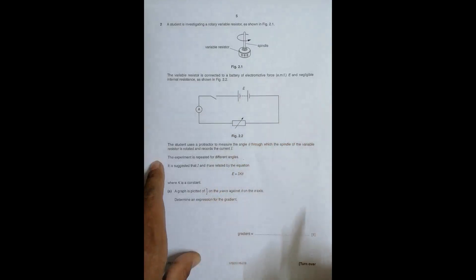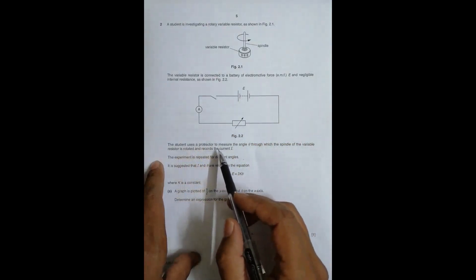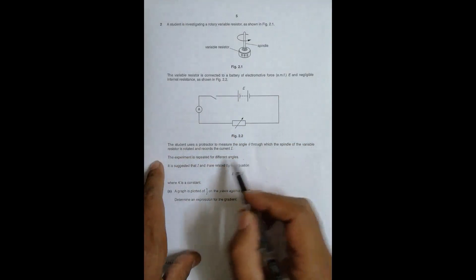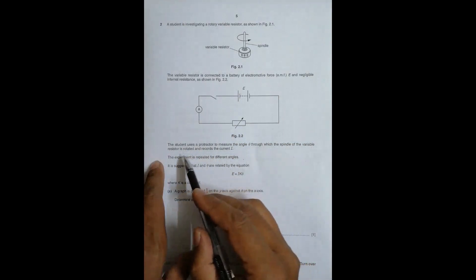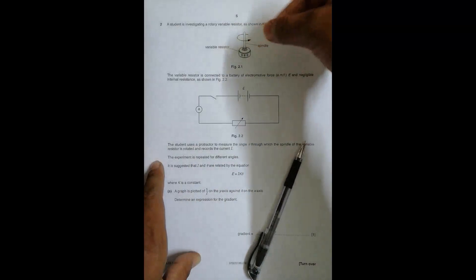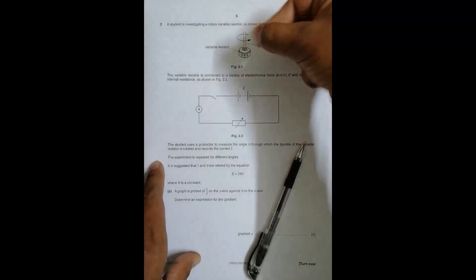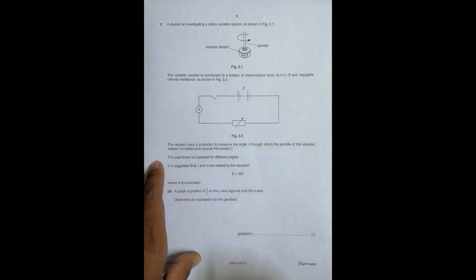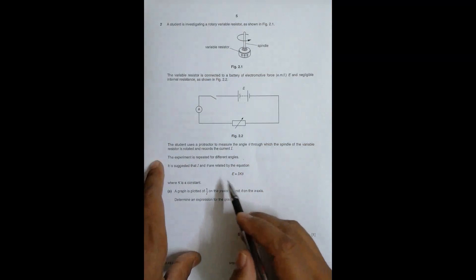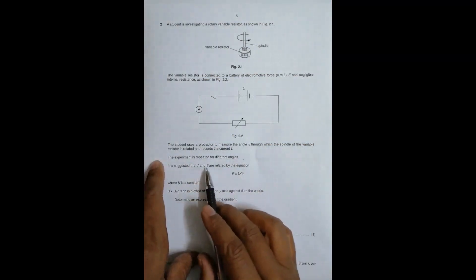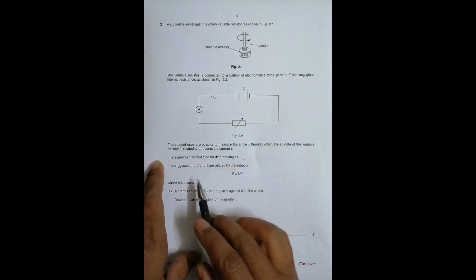The student uses a protractor to measure the angle theta through which the spindle of the variable resistor is rotated. So when you operate it, the protractor is used to measure the angle, and then the current I is recorded. The experiment is repeated for different angles.